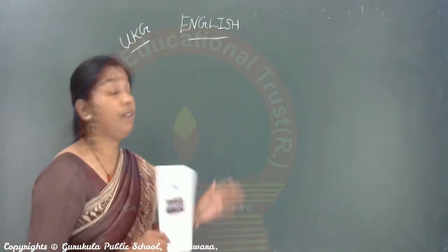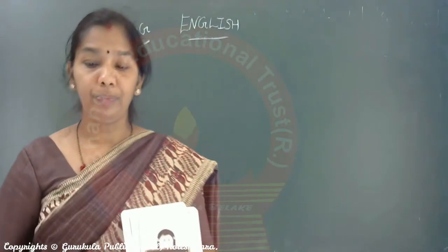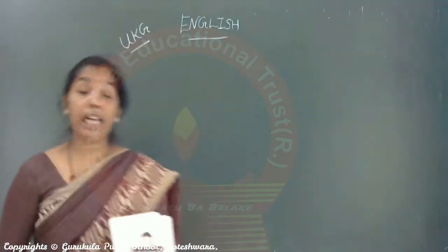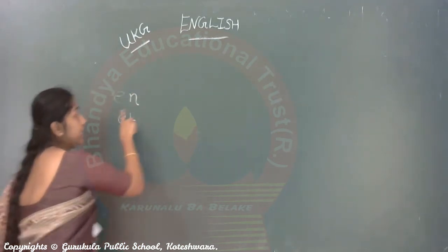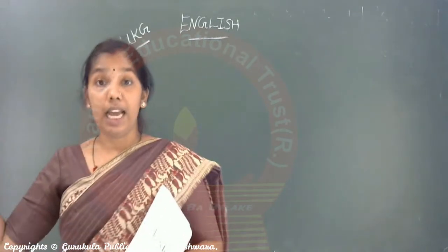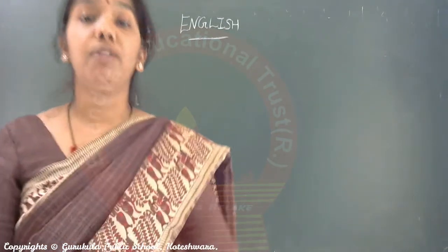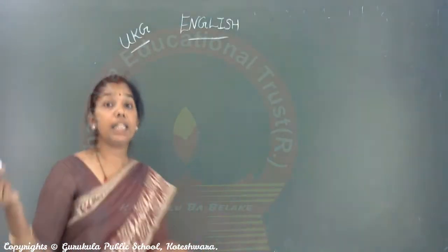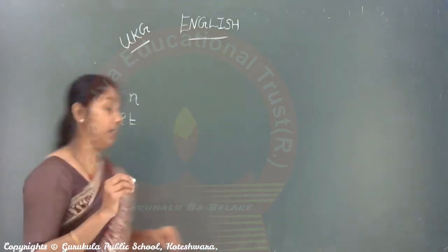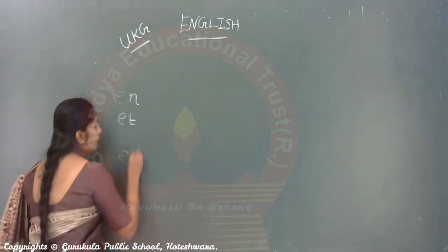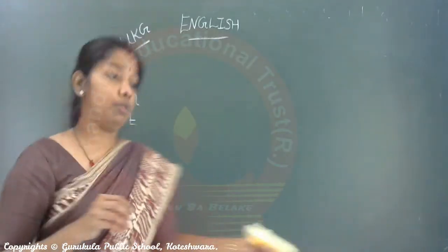Now let's come to the class. We were supposed to do verbal E-D words — three letter words. You have already done E-N words and E-T words. For example, E-N: F-E-N, M-E-N. In E-T words: S-E-T, W-E-T. Now today we are going to do E-D words. In E-D words, which are the consonants which will be added to E-D?